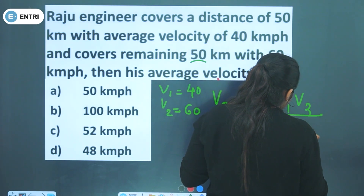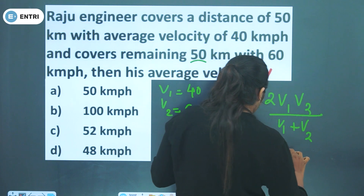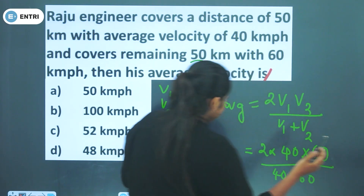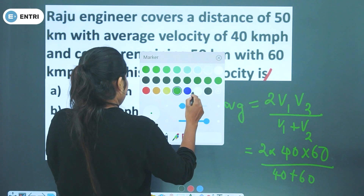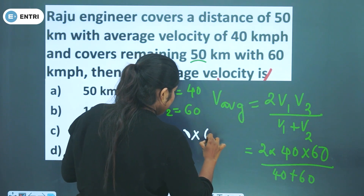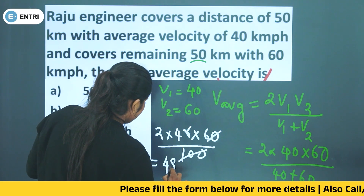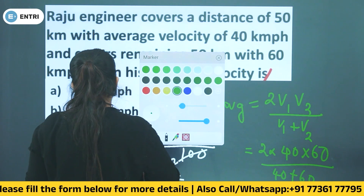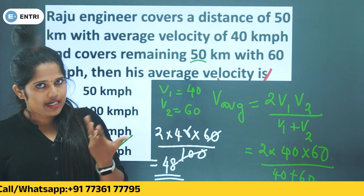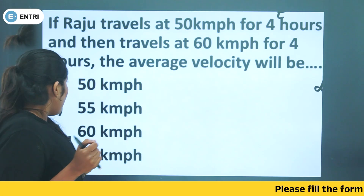Applying the formula: average speed equals 2v1v2 divided by v1 plus v2. So, 2 times 40 times 60, divided by 40 plus 60, which equals 4800 divided by 100, giving an average speed of 48 km per hour.